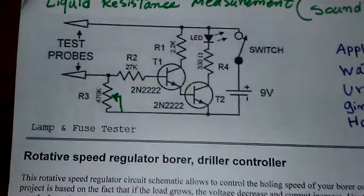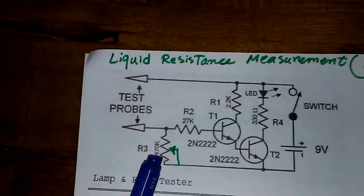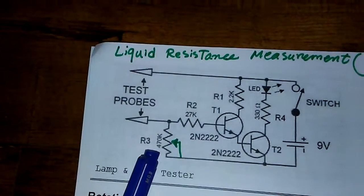I changed the 470K resistance with a pot as you can see here because most of the time the solution comes with a small amount of resistance.